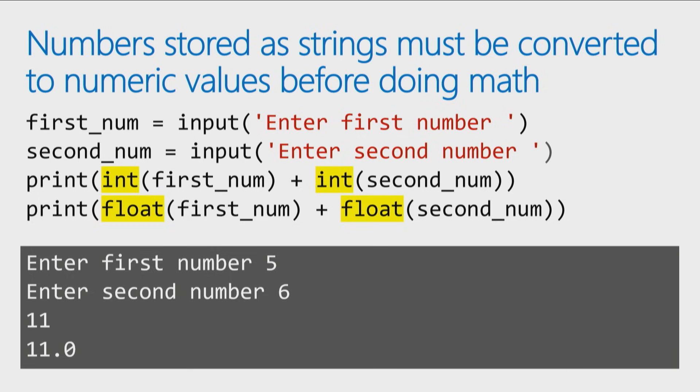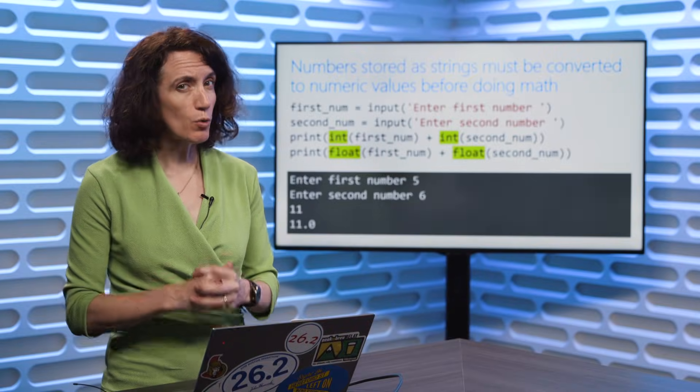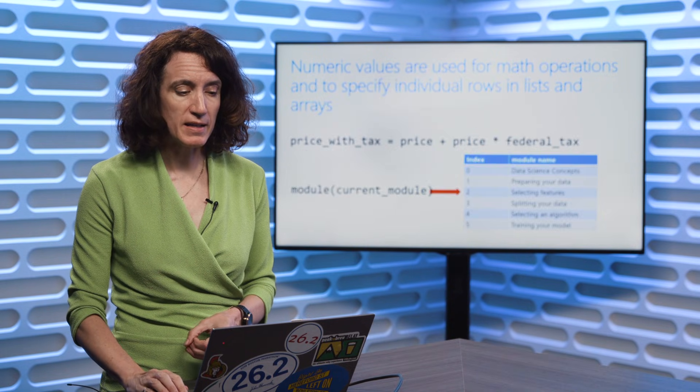So by using the int function, if I say print integer version of first number plus integer version second number, or float plus float, you can see it actually does the math correctly, and adds five plus six together and gives me 11. So be very careful when you're working with numbers to make sure it's using it as a correct data type at the right time.